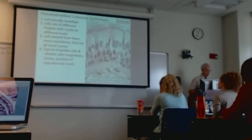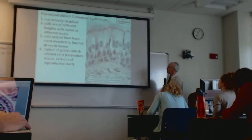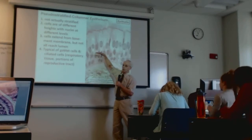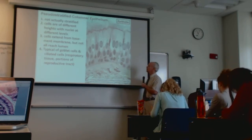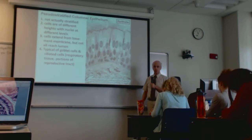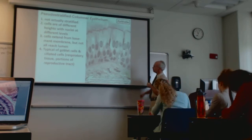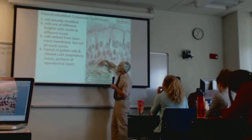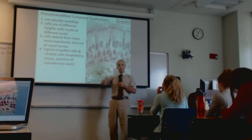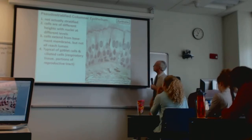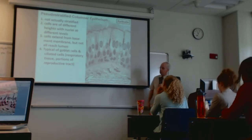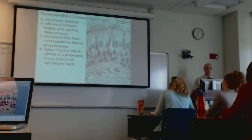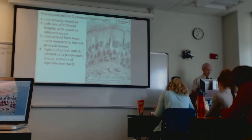Now we look at ciliated pseudostratified columnar epithelium. What you notice right away is that you don't have that nice linear arrangement of nuclei. Under a microscope, at almost any thickness, the cells look to be stratified — it looks like you have a cell layer down below — but in reality the cells are just curving, and the plane of section reflects that.